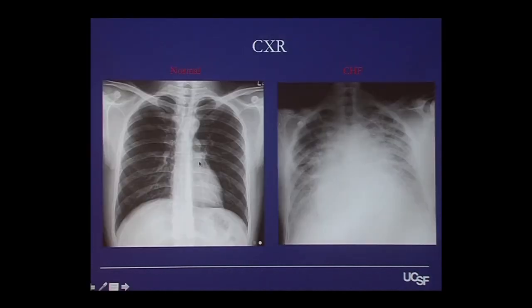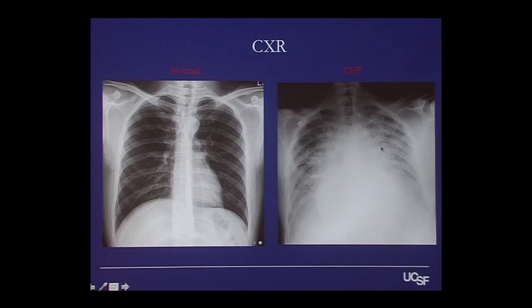A chest X-ray — here are your lungs, and this is the heart silhouette. You can see the lungs are clear and aerated in a normal patient. This is a patient with heart failure — if you look at the size here versus here, this heart is very enlarged. And you can see the lungs are all filled with fluid. That's why it has that whitish appearance — this is all air in a normal lung, and this is all filled with fluid in heart failure.